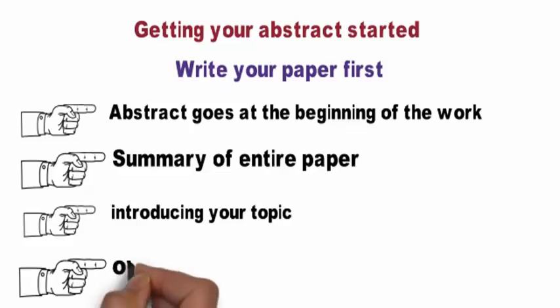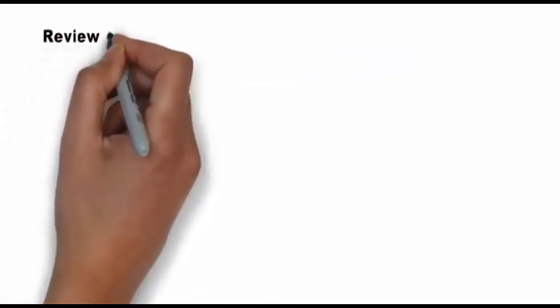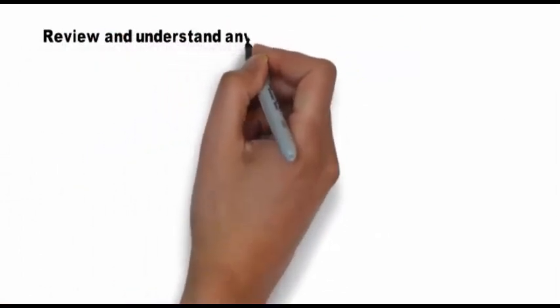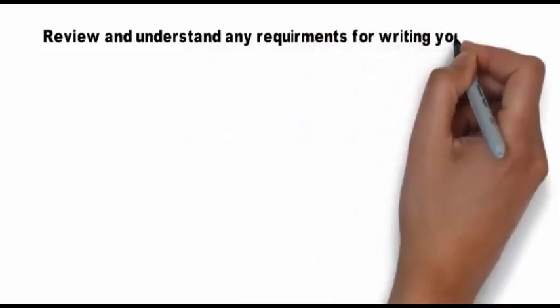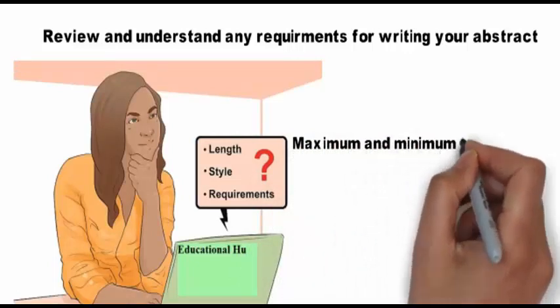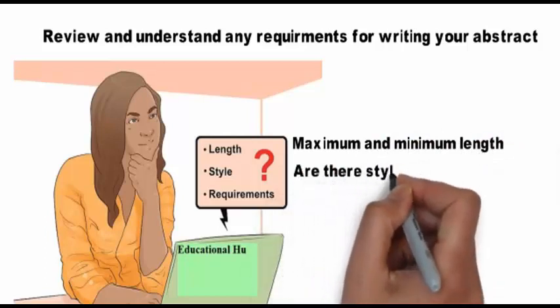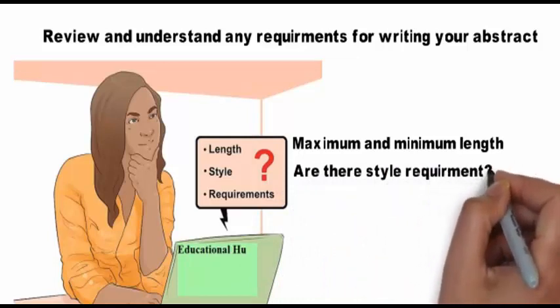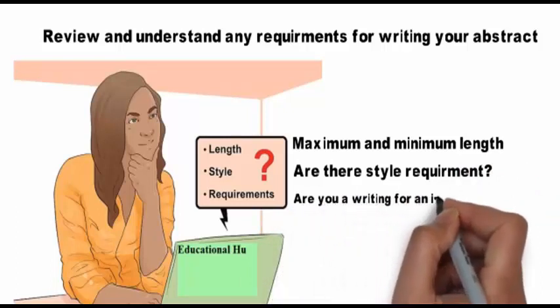Review and understand any requirements for writing your abstract. The paper you're writing probably has specific guidelines and requirements, whether it's for publication in a journal, submission in a class, or part of a work project. Before you start writing, refer to the rubric or guidelines you were presented with to identify important issues to keep in mind. First, is there a maximum or minimum length? Second, are there style requirements? Third, are you writing for an instructor or publication?